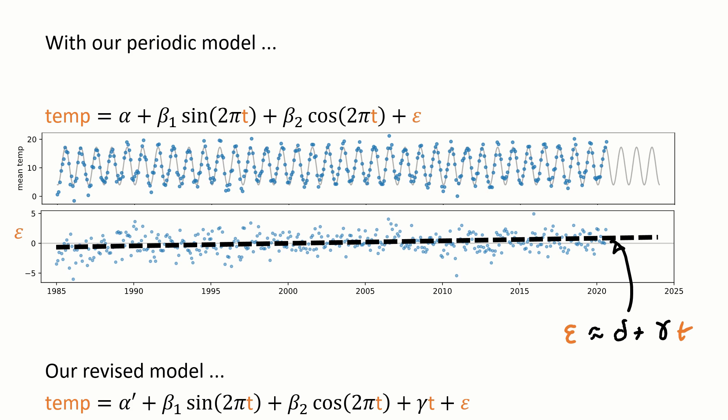Our revised model is just what we had before, plus gamma t. I don't need the delta term, because I've amalgamated it with the original alpha, and I'm calling the new parameter alpha prime. So that's the procedure for diagnosing problems with the model.